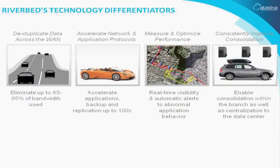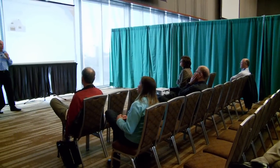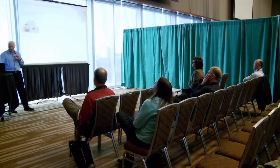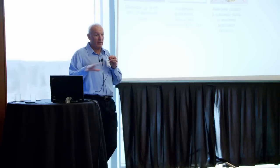The first thing we did is what we call data deduplication — removing, in this case, cars from a freeway but bytes from a wire. The first thing we do is remove between 65% — this is not a typo — and 95% of the actual bytes from the wire, or the WAN, in this case the satellite. We sit in a unique place in the network where we see all the traffic.